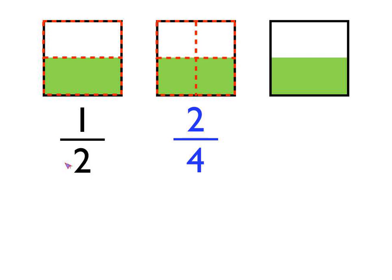But couldn't we also describe it as two quarters? Have a look at that second square in the middle. The same proportion of the square is shaded in green, but this time I've split the square up into four equal-sized pieces. So there's a four in the denominator, the bottom of the fraction, and there's two of those pieces shaded in. So we can describe the same proportion of the square as being shaded in with two different fractions.